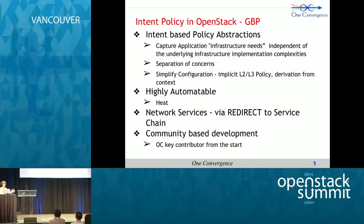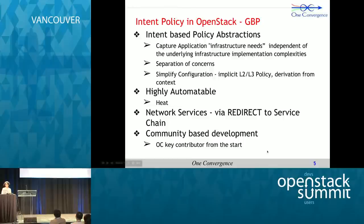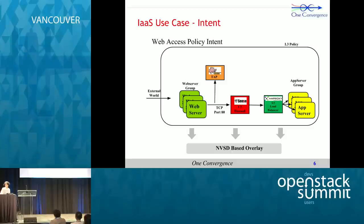Group-based policy ties network services in through a redirect action. The infrastructure deployer specifies a set of service nodes for a service chain, and the redirect action steers traffic to that service chain. Group-based policy is a community-based effort, and OneConvergence has been a key contributor from the start. With that, I'll move into the second part of my talk — the showcase demo.